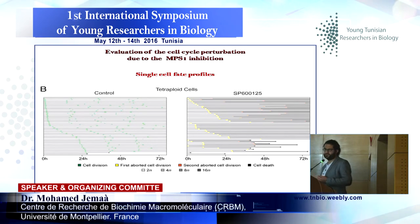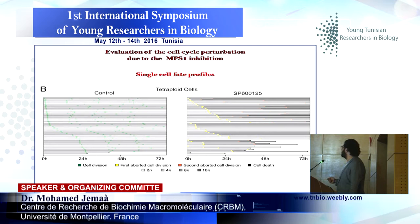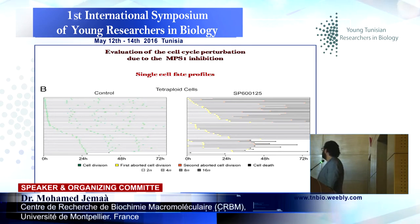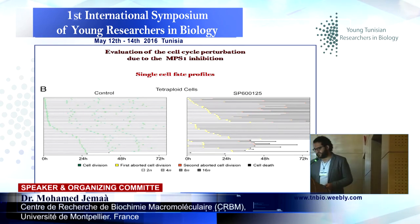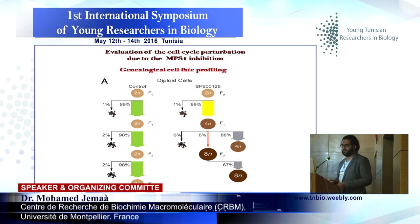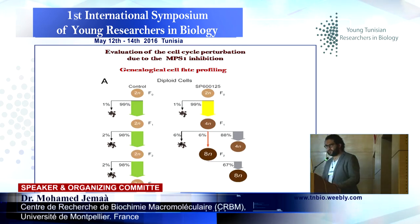So we performed a kind of single cell fate analysis — we followed individual cells and observed what happens. In the control condition, the green snapshot means the cell executed a normal division. But in the context of MPS1 inhibition with SP600-125, we clearly see cells undergo a first aborted mitosis, then a second one. But this kind of analysis gives information relative to only one cell, and we cannot have an idea about the whole population of treated cells. So we tried another type of analysis — genealogical cell fate profiling — but this remains insufficient to understand what really happens to a large population.